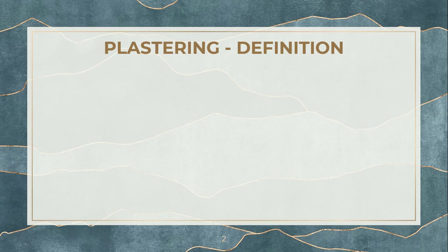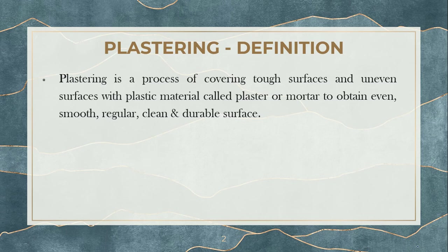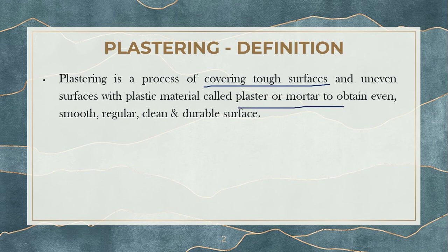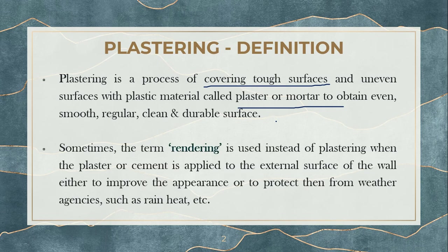So we'll move on with today's session, which is all about plastering. First of all, what do you mean by plastering? As I've already told, it's a part of building finishing. Plastering is a process of covering surfaces with a material called plaster or mortar. So plastering means covering a surface with plaster so that you get a smooth, regular, clean, and durable surface. Sometimes people also call this plastering as rendering.